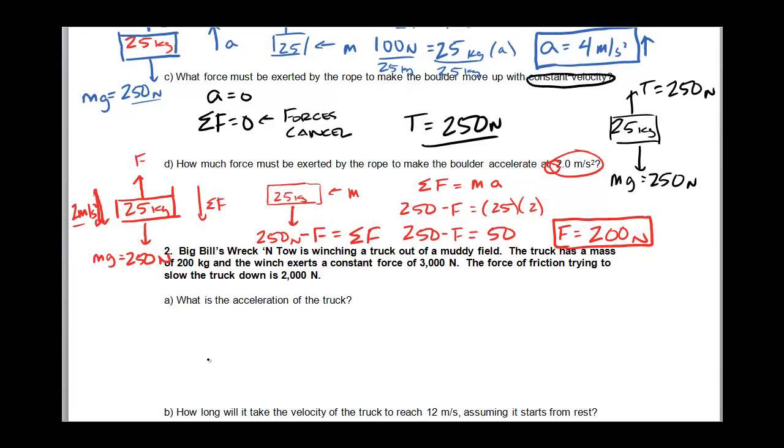Big Bill's wrecking tow is winching a truck out of a muddy field. So the truck has a mass of 200 kilograms. The winch exerts a force of 3,000 newtons, and the truck is being slowed down by a friction of 2,000 newtons.